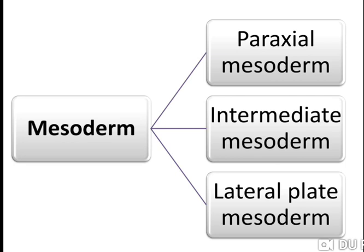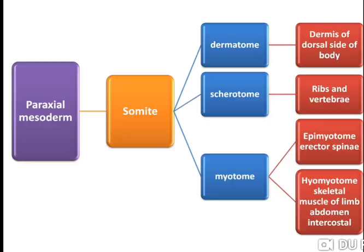Mesoderm can be divided into paraxial mesoderm, intermediate mesoderm and lateral plate mesoderm. First we will deal with paraxial mesoderm. Paraxial mesoderm gives rise to the somites which are total 44 in number, of which 38 are definite somites. Somites further differentiate into dermatome, sclerotome and myotome.